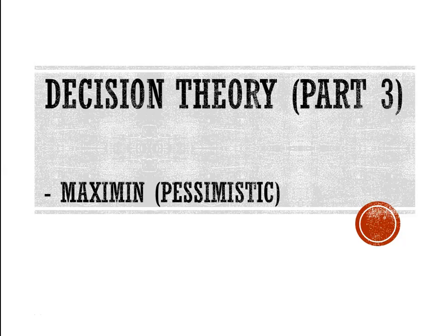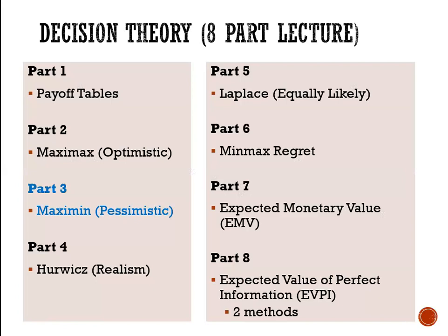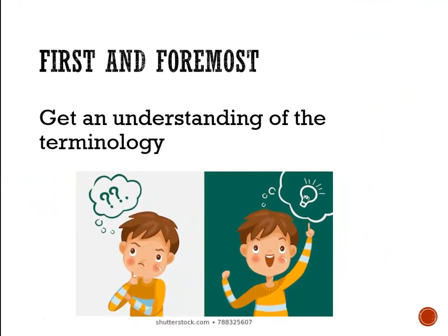Greetings. We continue our 8-part lecture series on Decision Theory. Now we're looking at Maximin, otherwise called the Pessimistic Criterion. We started with Part 1, Interpreting our Payoff Tables, Part 2, Maximax, and now we're at Part 3.